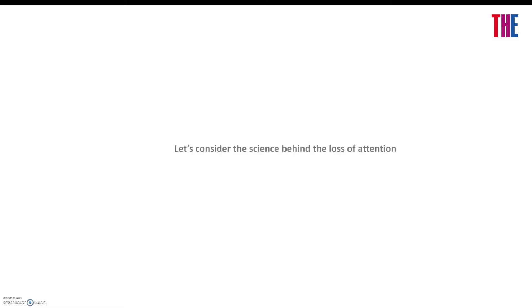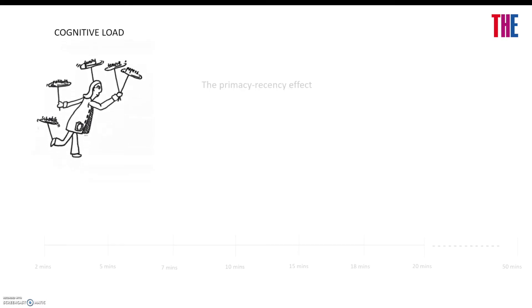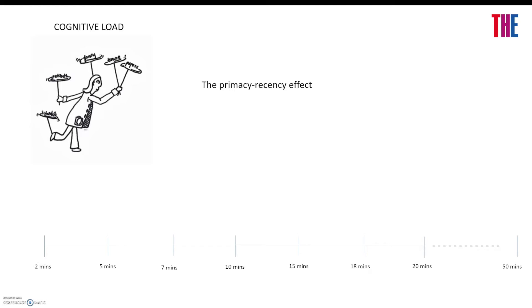So let's look at the science behind the loss of attention. It's very much affected by cognitive load. A specific observation of cognitive load theory is the primacy-recency effect, where learners remember the initial content in a list and the last, but not the middle.